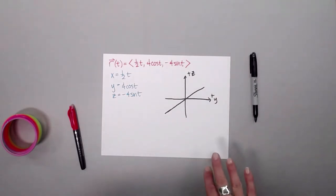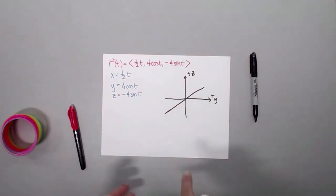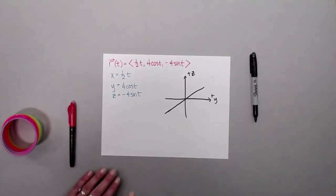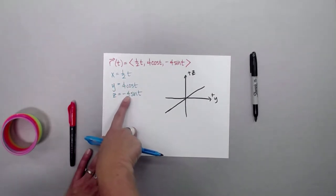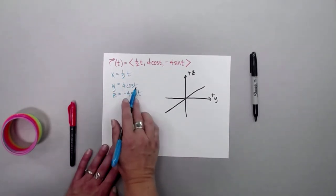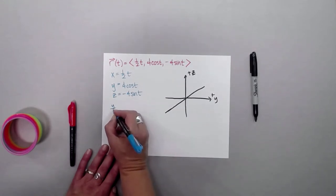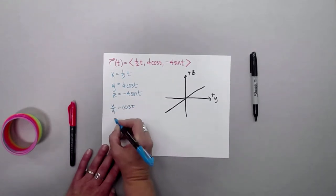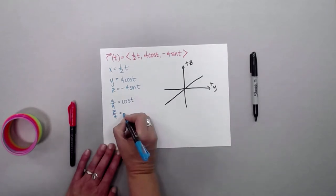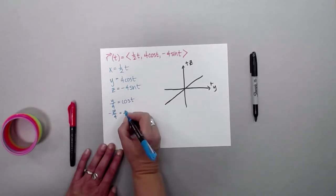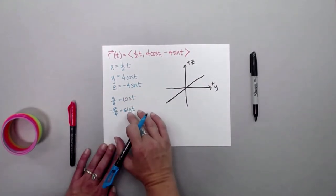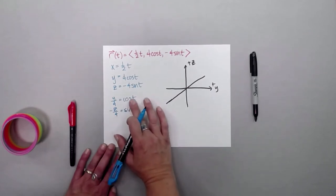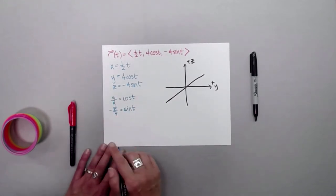The more of these you do, the quicker you'll recognize the shape of this graph. I'm going to go through this in case you need a refresher — we did do a previous example. I would like to eliminate the parameter, and I'm going to focus on the two equations that involve the trig function. I'll solve for the trig function: y over 4 equals cosine of t, and negative z over 4 equals sine of t.